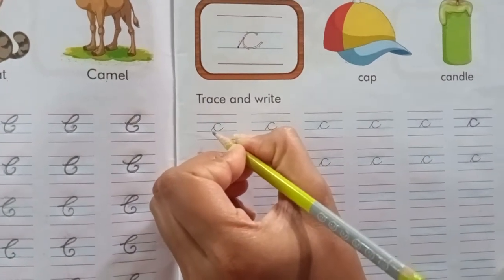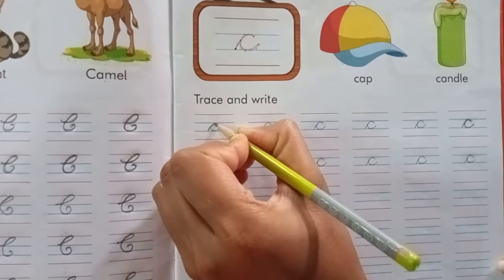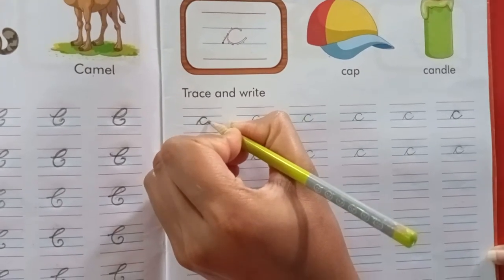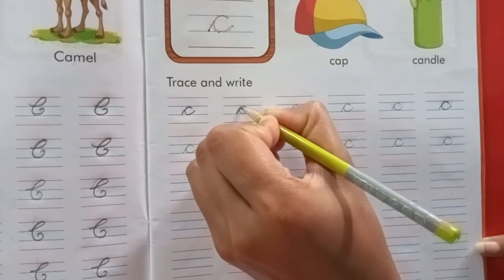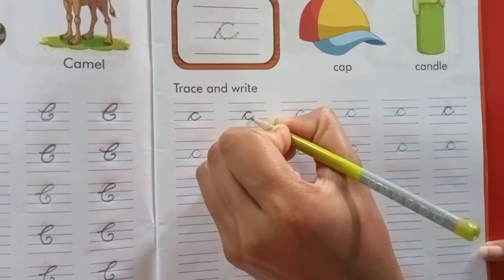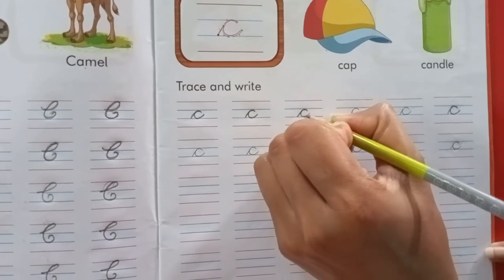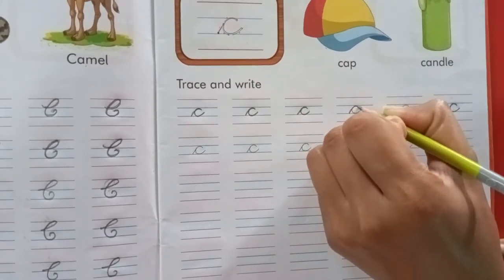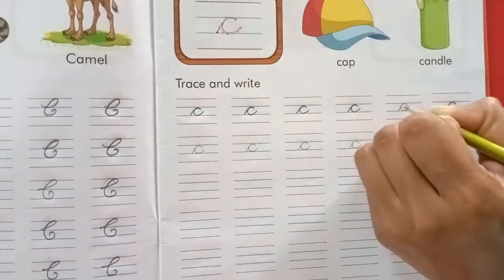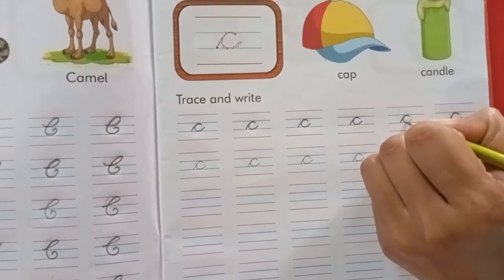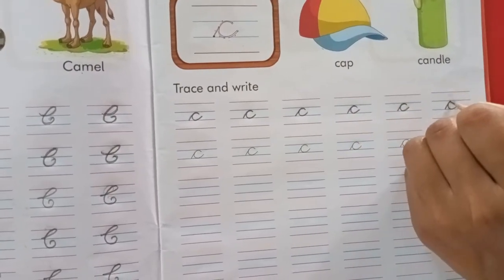Okay. You all have to trace with me. Letter C. Like this. Okay beta. In the small blue lines only. Okay. Write properly, neat and clean. Okay beta.